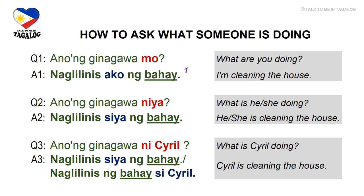Question 1: Anong ginagawa mo? — What are you doing? Answer 1: Naglilinis ako ng bahay. Naglilinis means cleaning and bahay is house. Naglilinis ako ng bahay — I'm cleaning the house. Question 2: Anong ginagawa niya? — What is he or she doing? Question 3: Anong ginagawa ni Cyril? — What is Cyril doing? Answer 3: Naglilinis siya ng bahay. You may also say Naglilinis ng bahay si Cyril — Cyril is cleaning the house.